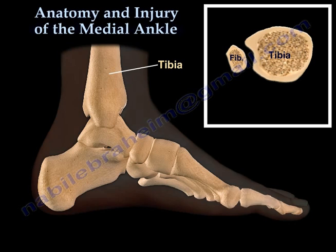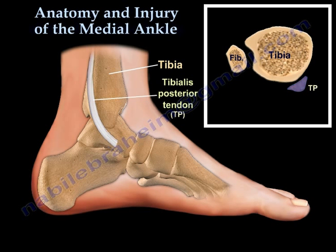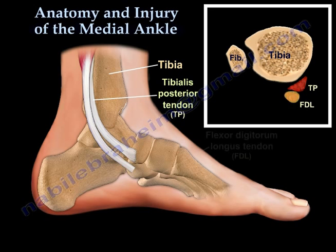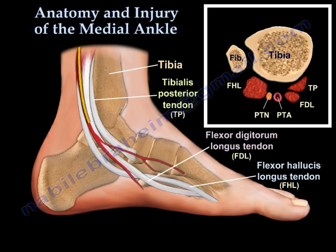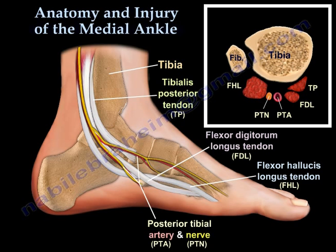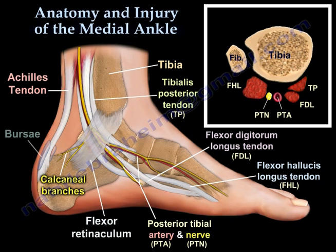Anatomy of the medial ankle includes the tibia, the tibialis posterior tendon, the flexor digitorum longus tendon, and the flexor hallucis longus tendon. Here you can see the posterior tibial artery and nerve and its calcaneal branches, as well as the flexor retinaculum, the Achilles tendon, and the bursa.